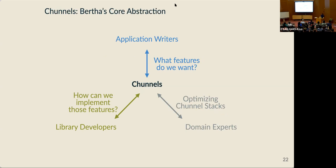Bertha's core abstraction to solve this problem is the channel. The channel abstraction is how applications and libraries can agree on which implementations of connection features to use. Applications specify which channels they want to use, and library developers provide implementations of those features using underlying services and logic. These roles are logically separated and the people who perform them don't need to know each other — just as an application developer can use a library from a package registry, they can use a channel implementation from a public repository.